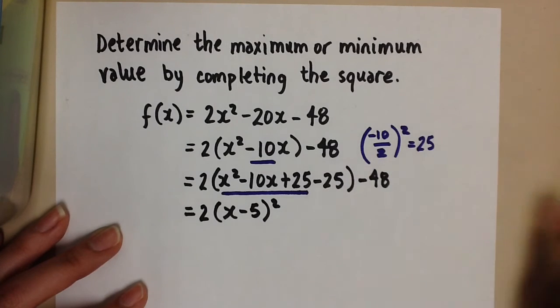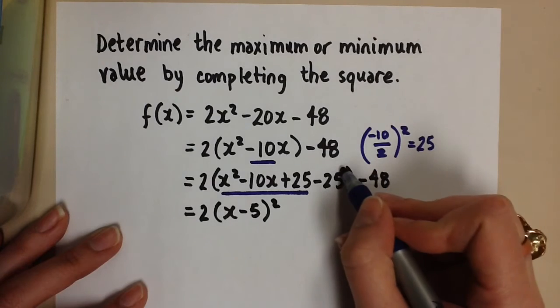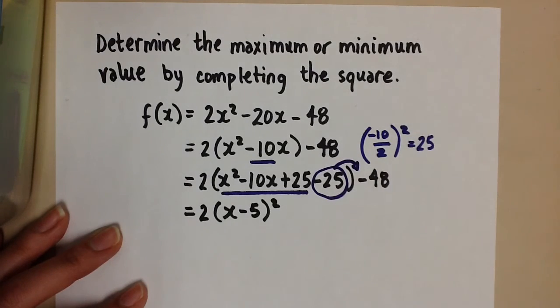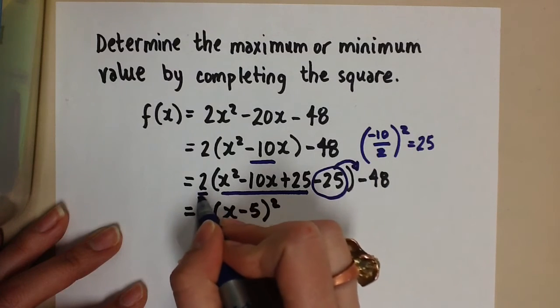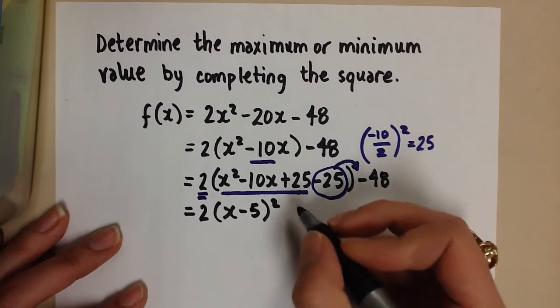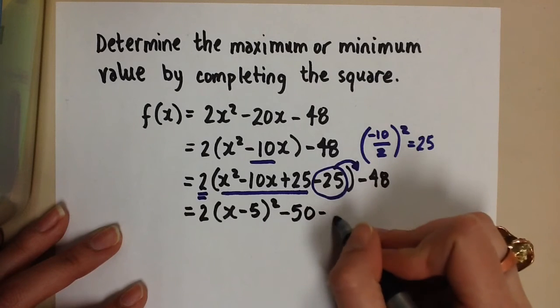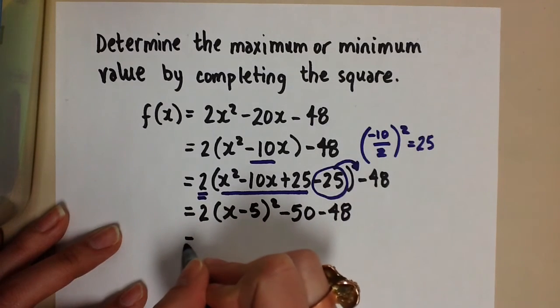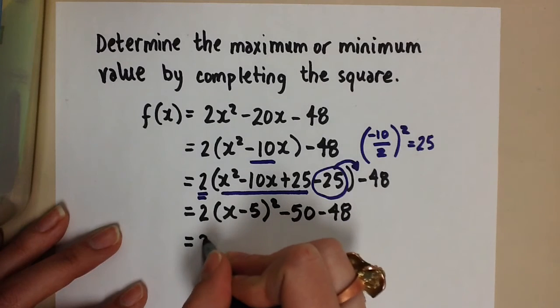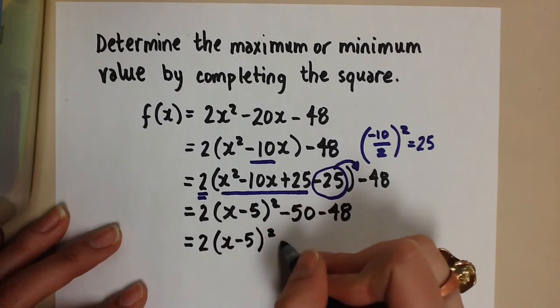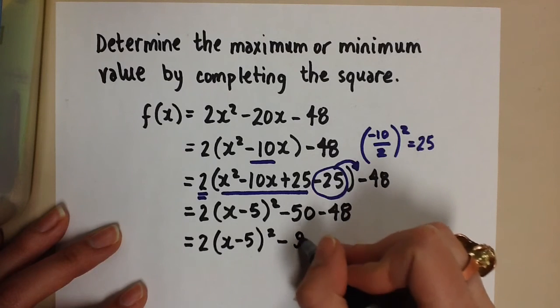That means that this minus 25, we're going to bring outside of the brackets. But to do that, it has to be multiplied with the 2 first. So when it comes outside of the brackets, it will be minus 50, then minus 48. Now we want to combine the 2 like terms to get minus 98.